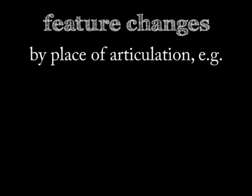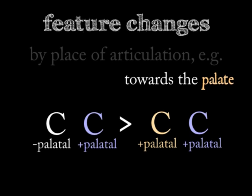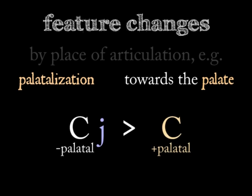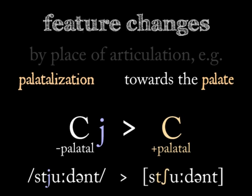Does the assimilating sound move its place of articulation closer to the palate? This happens when the sound it's assimilating to already has a palatal or near-palatal place of articulation. This is called palatalization, and its significant triggers include the consonant Y and the vowel E. For instance, some English speakers pronounce 'student' as 'student' — in rapid speech, the alveolar T assimilates to the palatal Y and becomes the palatal-alveolar CH.